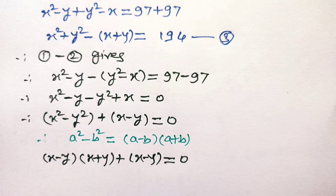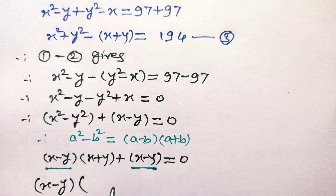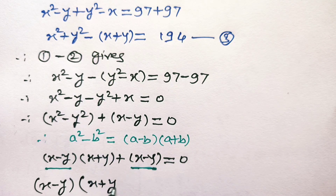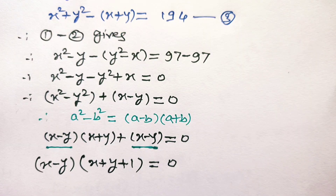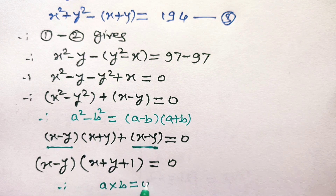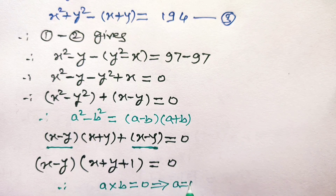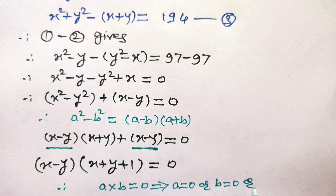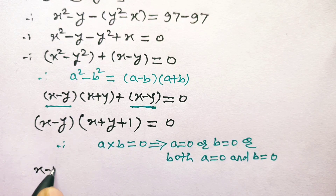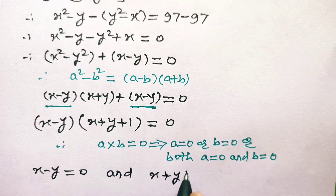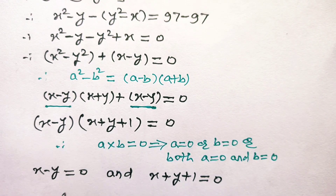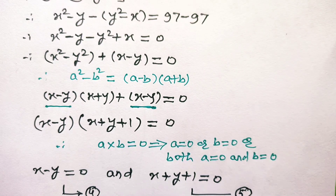Taking (x minus y) common: (x minus y)(x plus y + 1) is equal to 0. Since a times b equals 0 implies a = 0 or b = 0 or both, we get x minus y = 0 and x plus y plus 1 = 0. Consider these as equation number 4 and equation number 5 respectively.